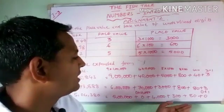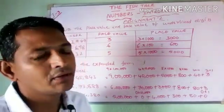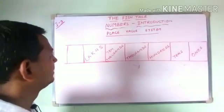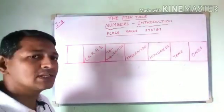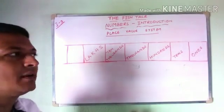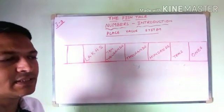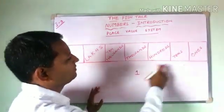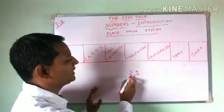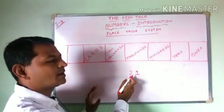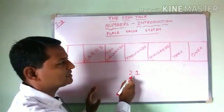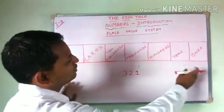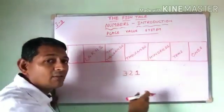Now we are going to understand the place value system. In Class 4, you might have understood how the value of a number depends upon its place. If you have the number 1 in the 1s place, and you write 2 towards its right, the value increases because 2 is in the 10s place. Writing one more number towards the right increases the value further. So we already know the place value system from Class 4.